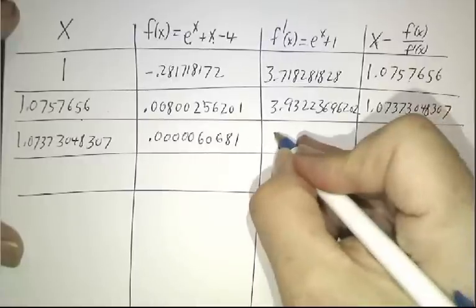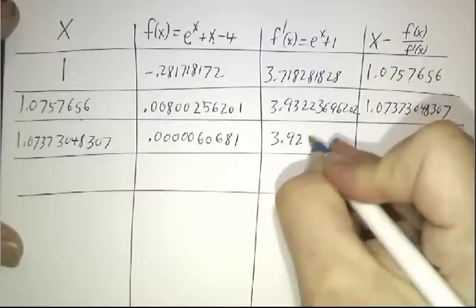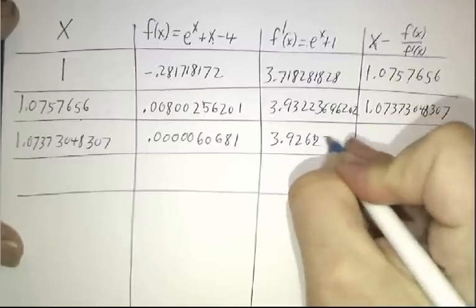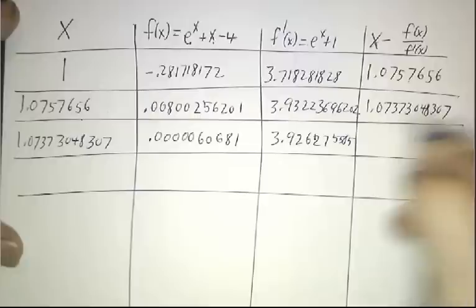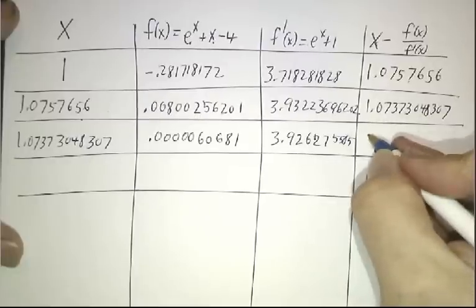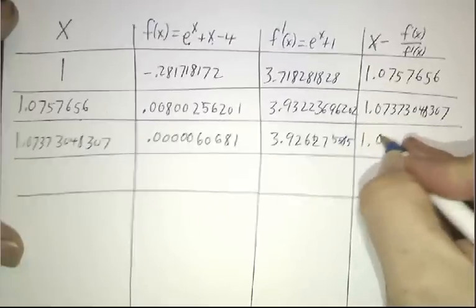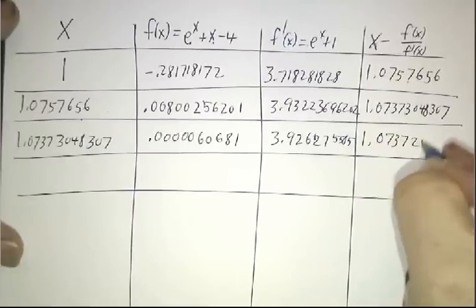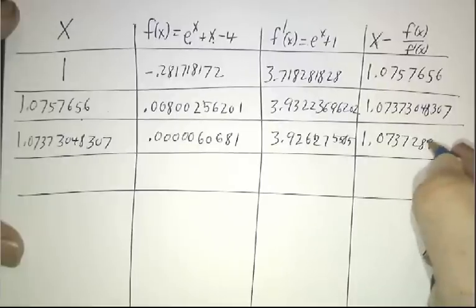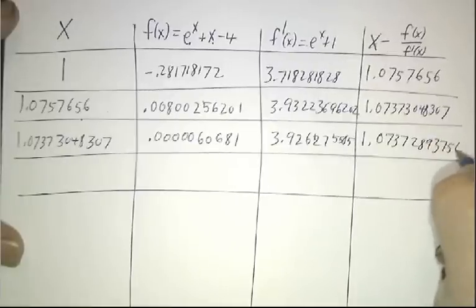You take f prime, which is 3.926275585, and the next answer is 1.07372893756.